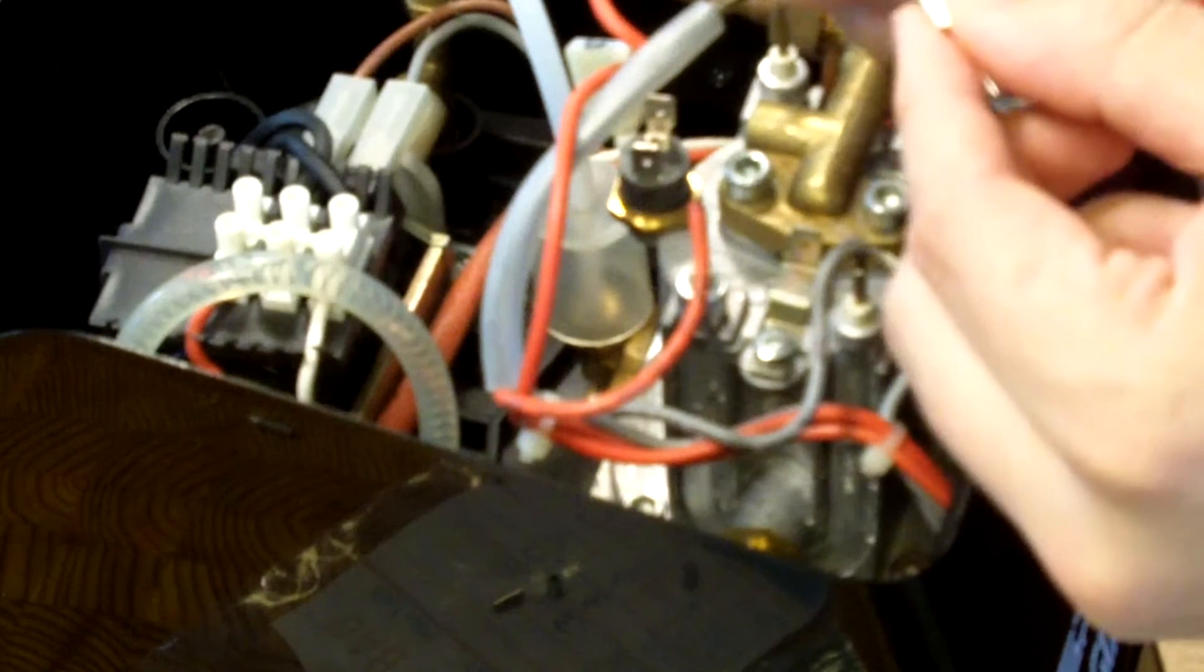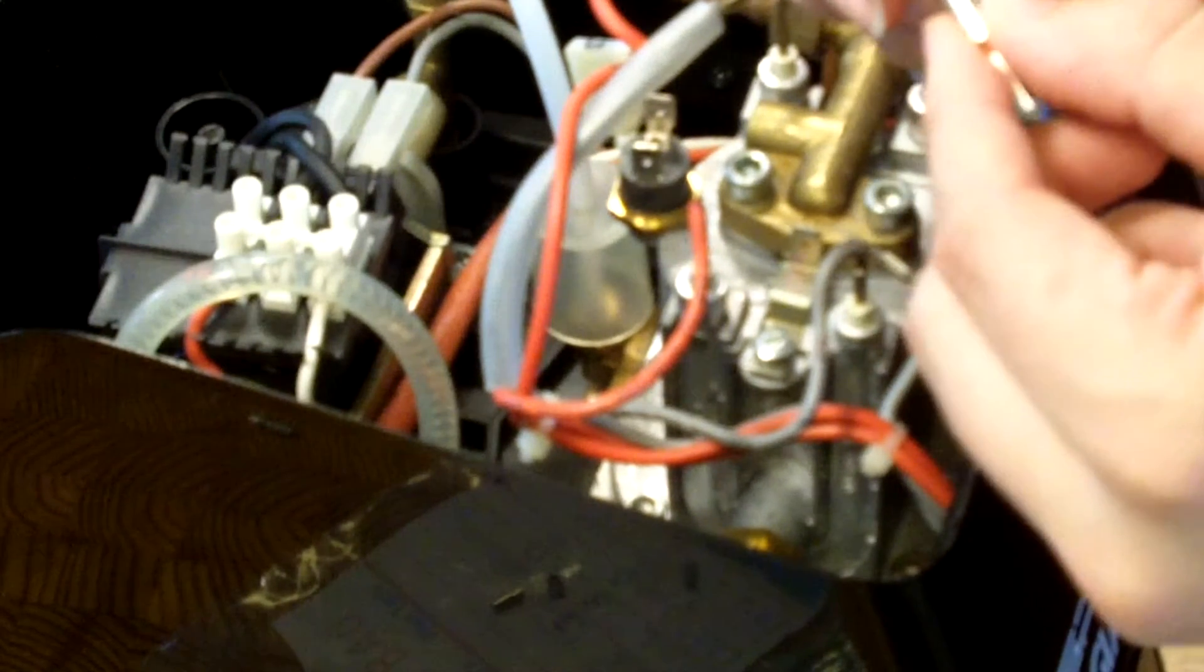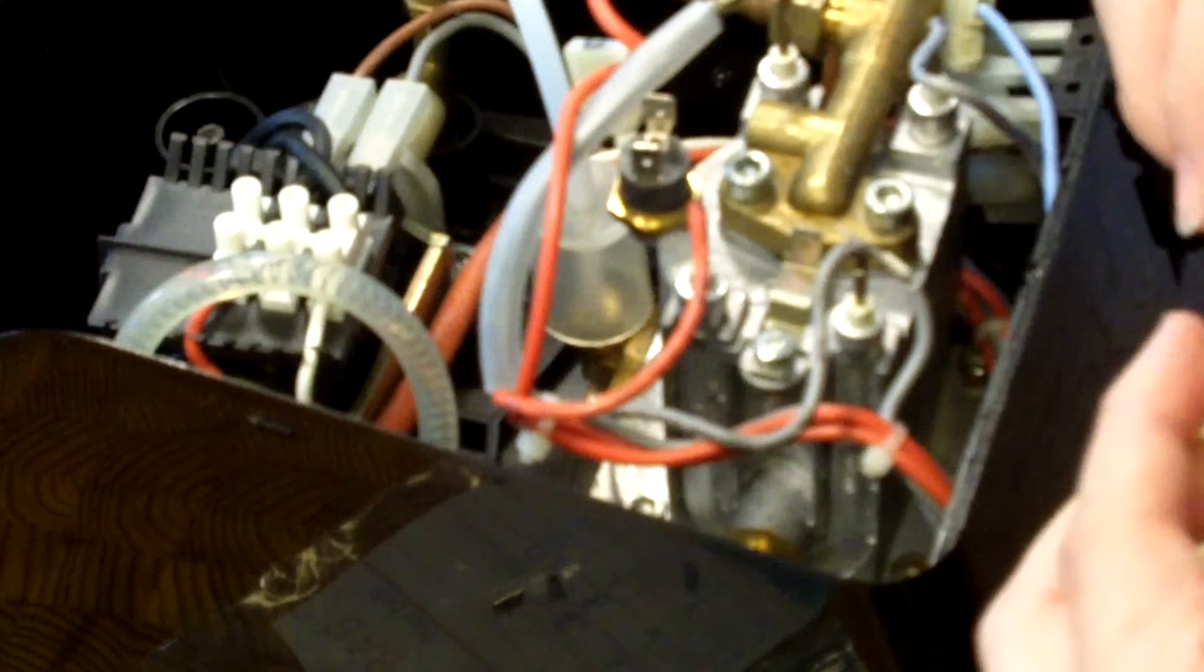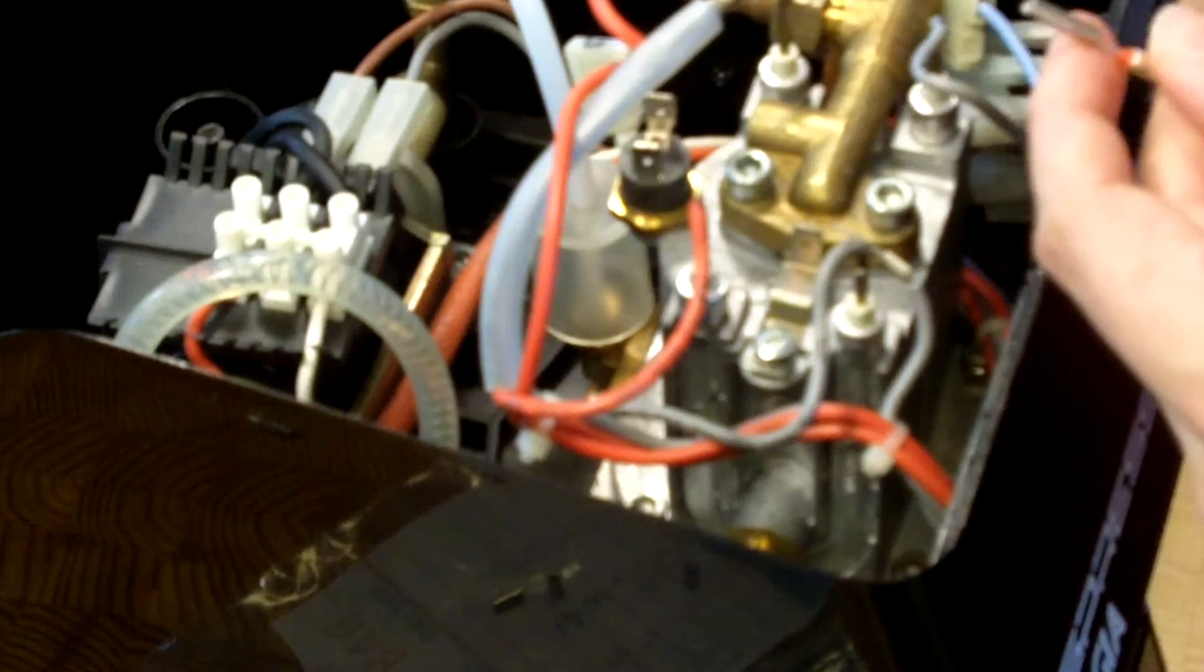So this in theory, it's prevented from going in too far by this crimp in the center here. And then it should be possible to crimp this down and get a positive connection that way. I'm just going to start with doing this side of this one.